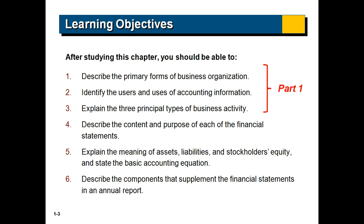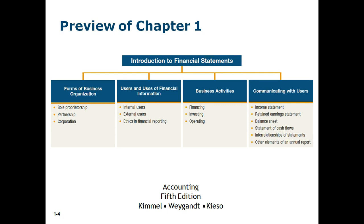Learning objective number four is probably the most important of all the learning objectives — really having a good handle on the financial statements — but we will get to that in the second part. The big picture of chapter one is connected along with those learning objectives, so we're going to focus on the first three here: forms of business organization, users of the financial information, and business activities. Then part two will cover the last component.